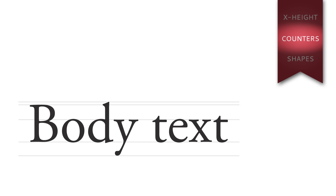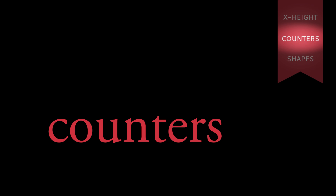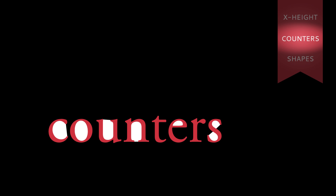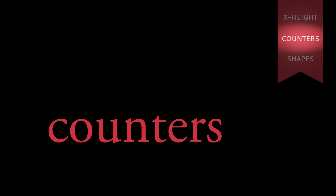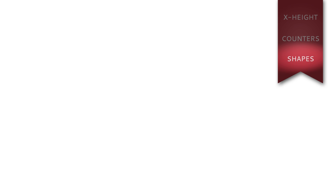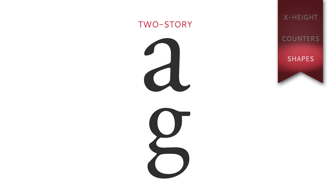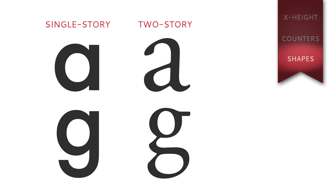Large open counters also increase legibility because they help define the typeface's characters. The counter inside an E is called an I. Individual character shapes also play a role — it is easier to read two-story A's and G's than single-story A's and G's.